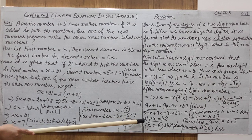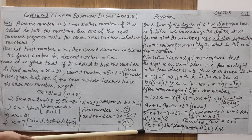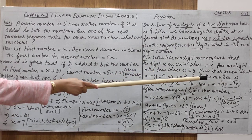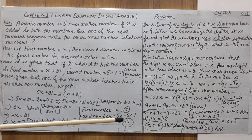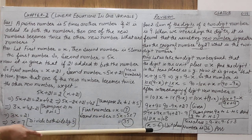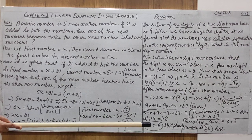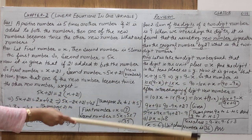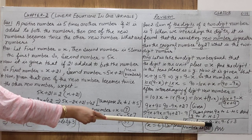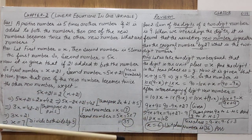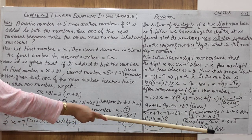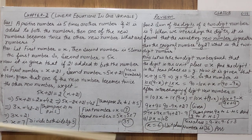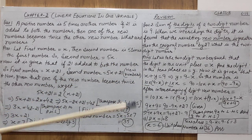Dividing both sides by 18, we get x = 6. Since x is the digit at the unit place, the unit digit is 6. The tens place digit is 9 − x = 9 − 6 = 3. So the two-digit number has 6 at the unit place and 3 at the tens place, giving us the number 36.